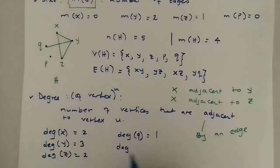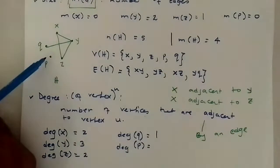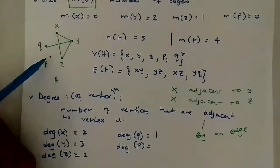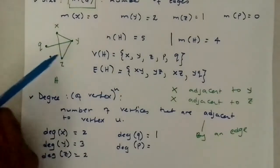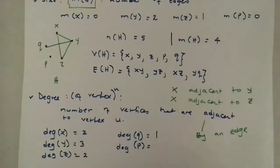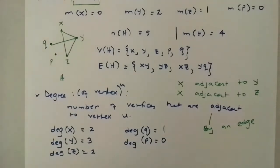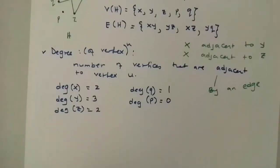Lastly, the degree of P: P is a vertex on its own. It is not adjacent to any other vertex — Y, Z, or Q — and is not connected to any other vertex by an edge. So the degree of P is 0. That is what we mean when we speak about the degree of a vertex.